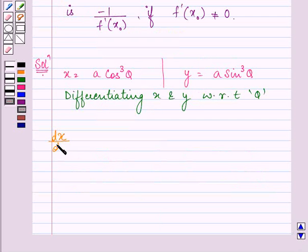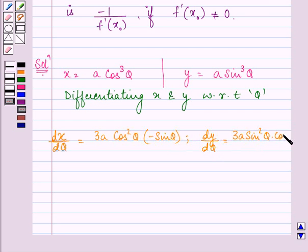We have dx by d theta as 3a cos square theta into minus sin theta, and we have dy by d theta as 3a sin square theta into cos theta.